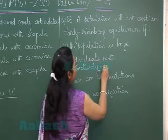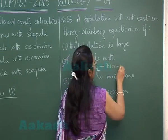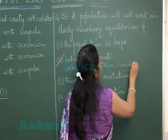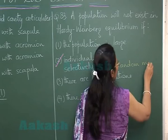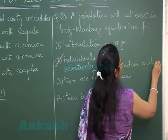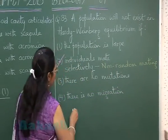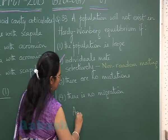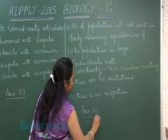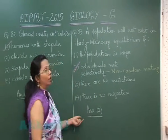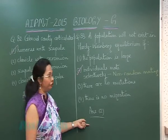Option 2 means non-random mating. That is our answer. Now let's move on to the next question, 84.